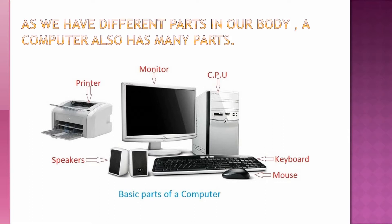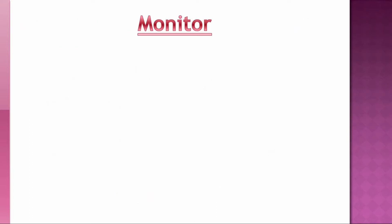A computer has four main parts. First one is monitor, second is CPU, third is keyboard, and fourth is mouse. This picture also shows you two more parts of a computer system, that is printer and speakers. Now one by one we will discuss each and every part of a computer system.